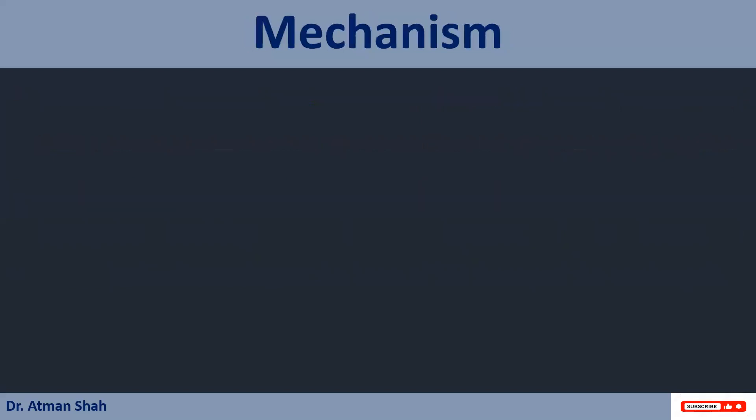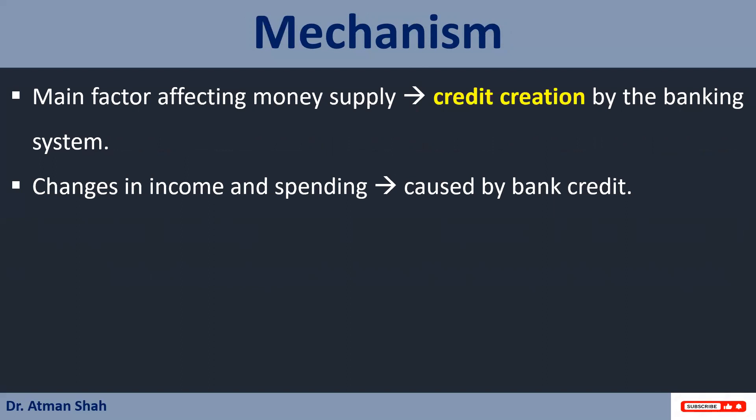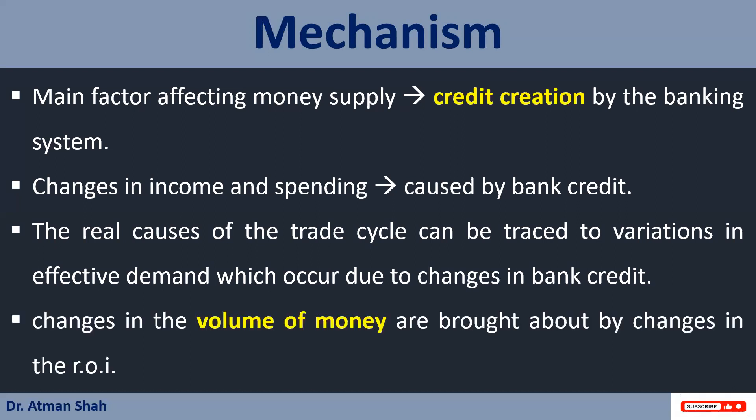Let's understand the mechanism. The main factor which affects the money supply is credit creation by the banking system. Changes in income and spending are caused by bank credit. So the real causes of the trade cycle can be traced to variations in the effective demand, which occur due to changes in bank credit. And changes in the volume of money are brought about by changes in the rate of interest. So the rate of interest changes the money supply, money supply changes the effective demand, and effective demand leads to the business cycle.